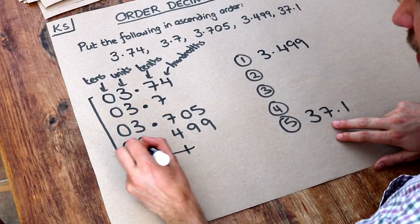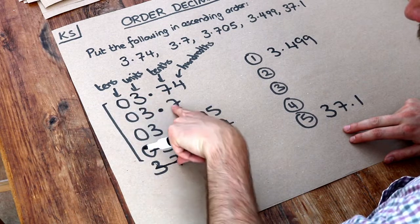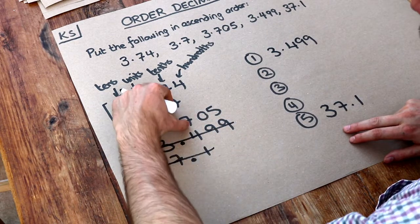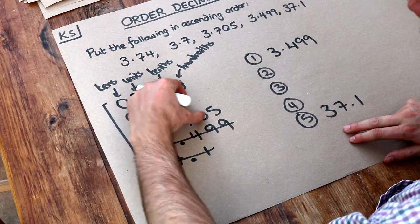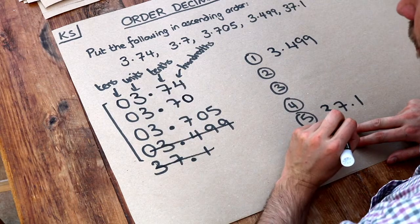So we've done with this one, and we've got rid of this one, and now it's between these. So they all have seven as the tenths digit, it's a draw, so we have to look at the next digit, the hundredths digit. Now there's no digit here at all, so I'm just going to put a zero there.